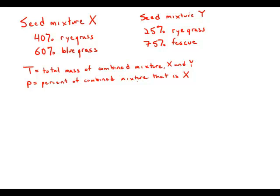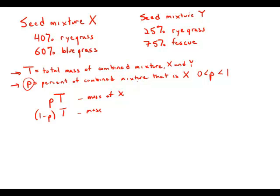So this is a very standard mixture problem. I'm going to use T for the total mass of the combined mixture — this is what's called a dummy variable because it will cancel out. And I'm going to call P the percent of the combined mixture that is actually X, which is what the question is asking for. I'm going to consider P as a decimal between zero and one. So P times T is the mass of seed X, and one minus P times T is the mass of Y.